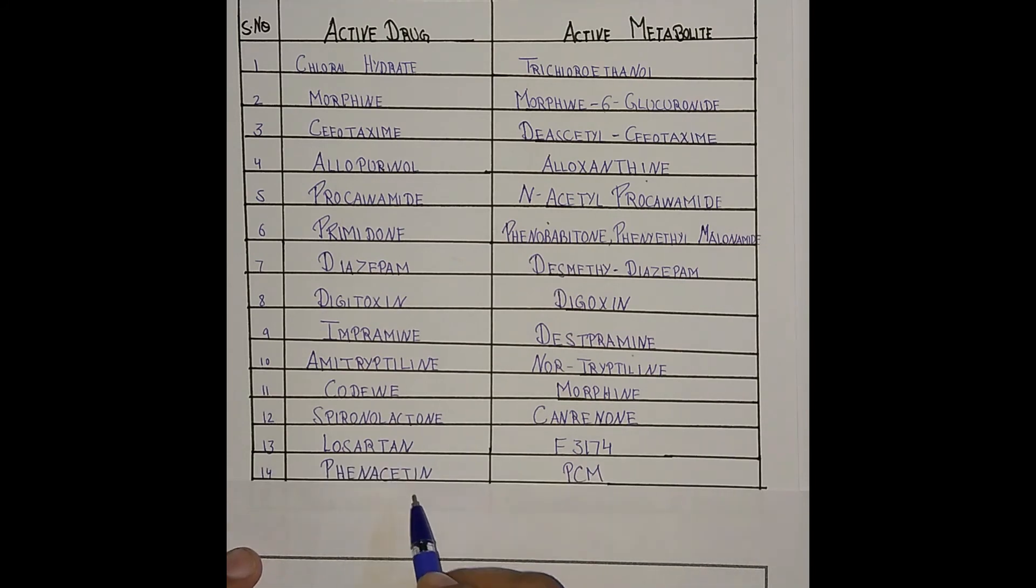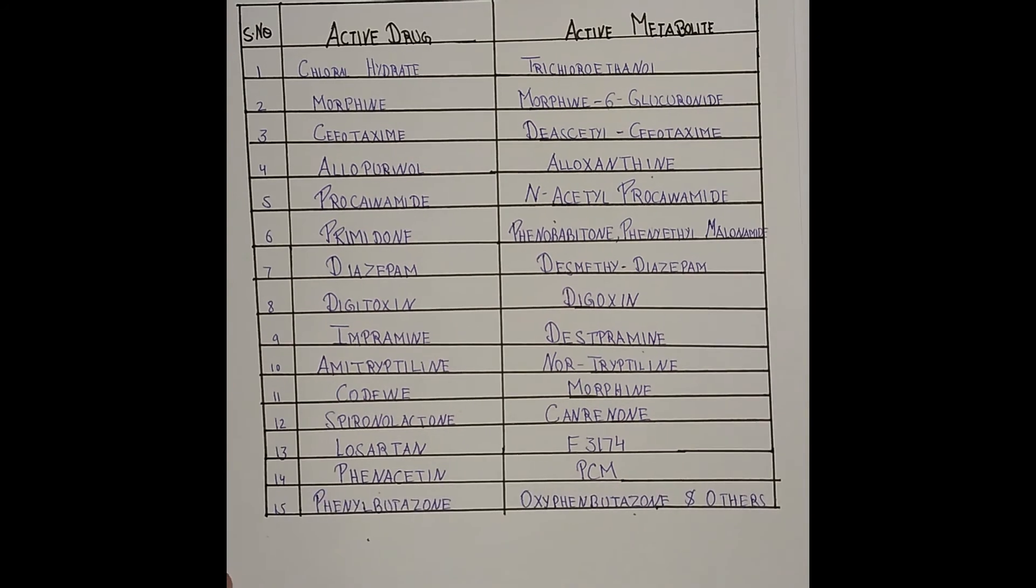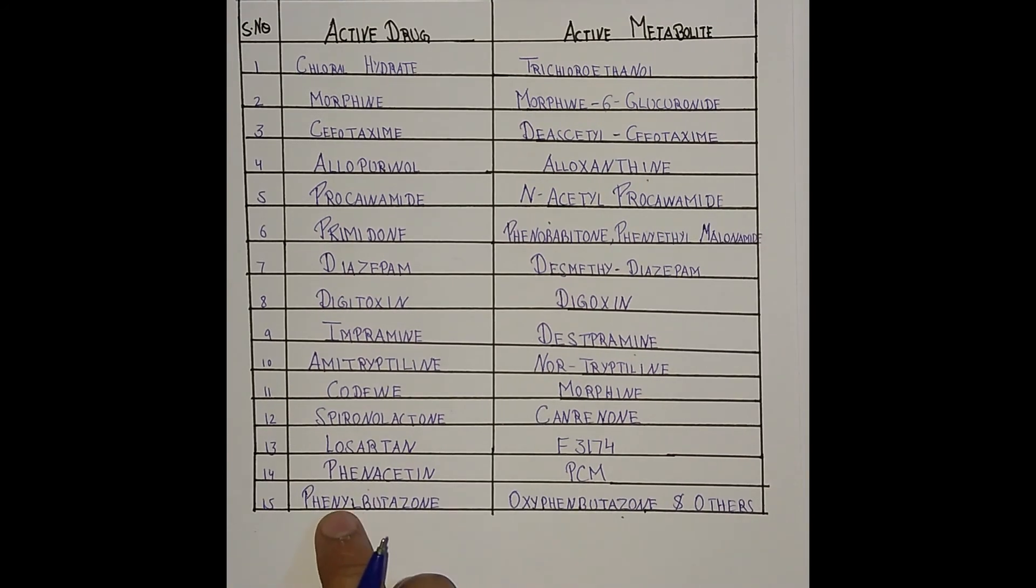Phenacetin has paracetamol, PCM students. It is a very basic question asked in various competitive exams: what is the active metabolite of phenacetin? The active metabolite of phenacetin is paracetamol. The last one is phenylbutazone.